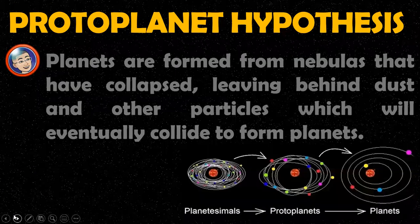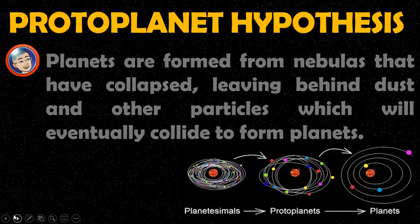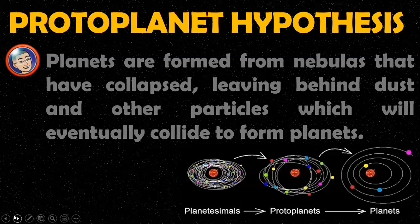We also have the protoplanet hypothesis, which has similarities with the nebular hypothesis. In fact, the protoplanet hypothesis incorporates most of the themes of the nebular hypothesis. Small dust particles began to accumulate due to gravitational force, forming bigger chunks that became planetesimals. These planetesimals were the real building blocks of the planets. When these planetesimals collided and merged, they formed protoplanets, and the same process took place to create the planets. However, the protoplanet hypothesis did not explain the formation of the two sets of planets.